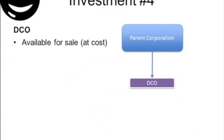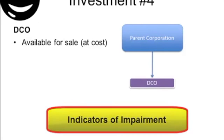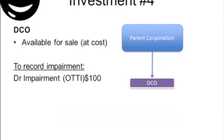D-Co would continue to be carried at cost throughout the investment holding period, unless indicators of an other-than-temporary impairment arose. Each of the negative events noted during the year are indicators of a potential impairment, including the dividend cut, the inability to refinance maturing debt, and the initiation of a strategic review. The business valuation provides an estimate of the fair value at the reporting date. Our 10% stake in the $1 million equity value implies that our ownership interest is worth $100,000 at the reporting date. Thus, it is necessary to report an other-than-temporary impairment charge against income for the difference between our $200,000 carrying value and the $100,000 value at the reporting date.